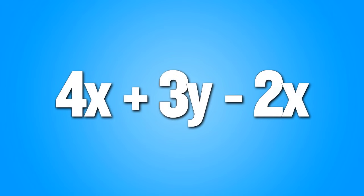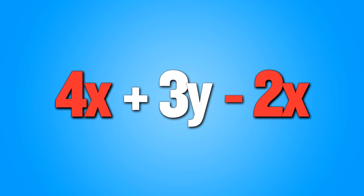Let's take a look at an algebra one example. We have 4x plus 3y minus 2x. And if I were to ask you who is on the same team, 4x and minus 2x would be on the same team because they have the same letter — the same jersey, whatever you want to call it. They look the same. We're going to combine those.